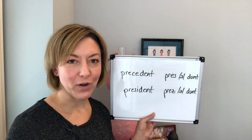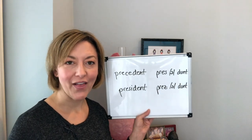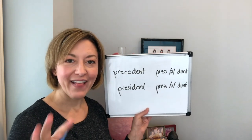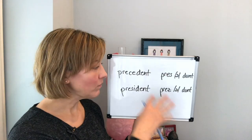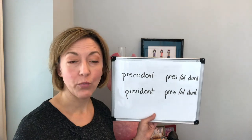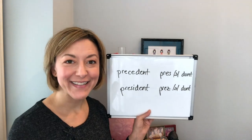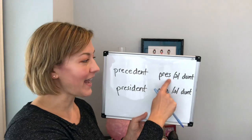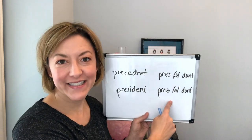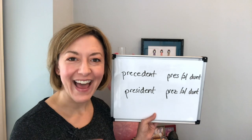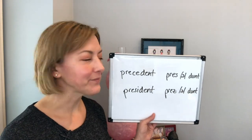Both of these words have three syllables. The middle syllable is going to be the schwa — the 'uh' — and the ending syllable 'dunt' will be exactly the same. Both words also begin with 'pr,' and those are exactly the same. The difference is this: S versus Z, which is voiced. That is the main difference in these two words — just one little sound.